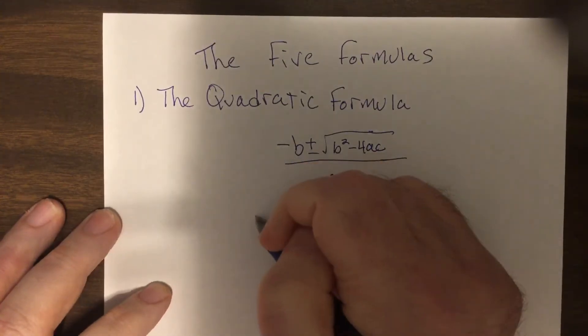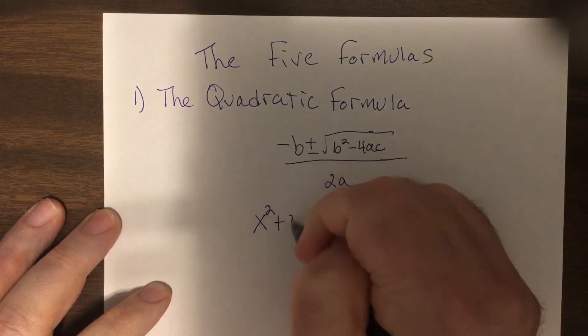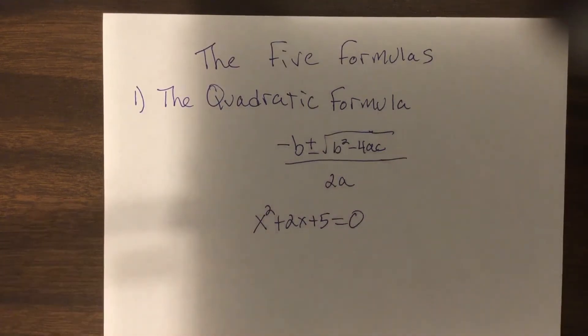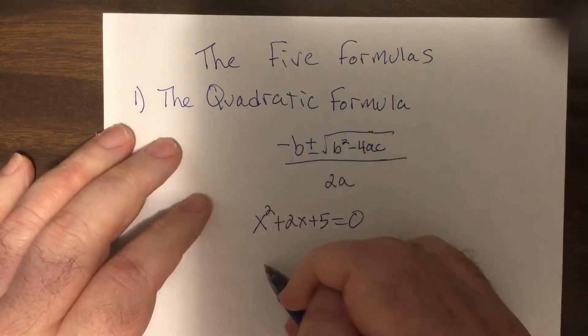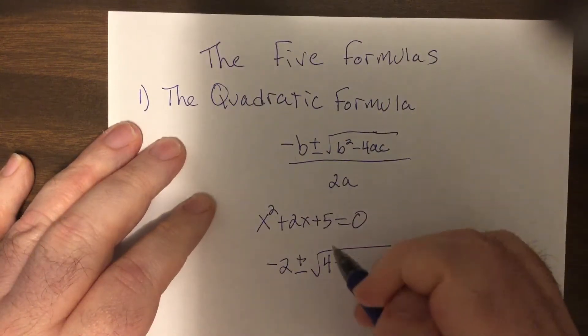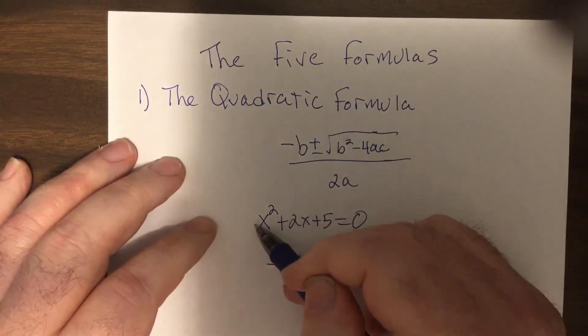If we have x squared plus 2x plus 5 equals 0, you just plug and chug: the opposite of b plus or minus the square root of b squared minus 4ac.